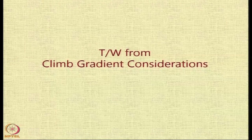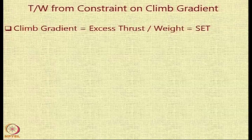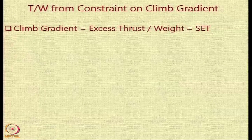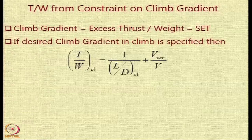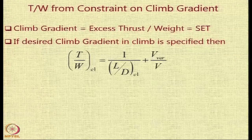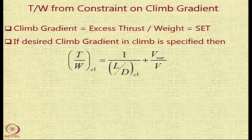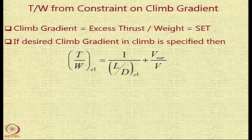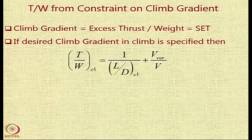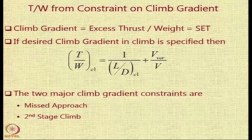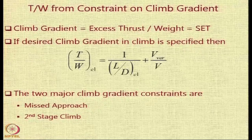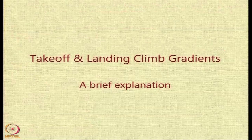Now let us understand how to calculate thrust-to-weight ratio from climb gradient considerations. Climb gradient is essentially excess thrust divided by weight, also called specific excess thrust (SET). If the desired climb gradient is specified by regulatory bodies or performance requirements, the required T/W in climb equals 1/(L/D) in climb plus V_vertical divided by forward speed V. Two major climb gradient considerations must be included: the missed approach gradient and the second stage climb gradient.